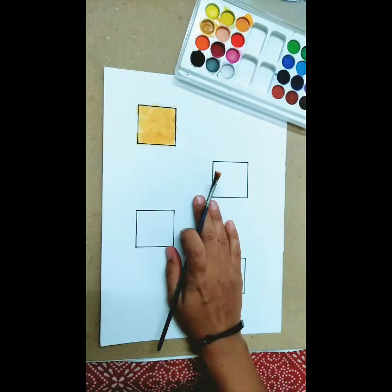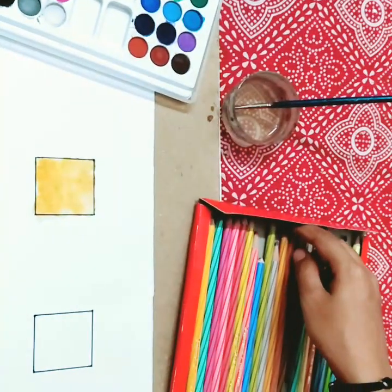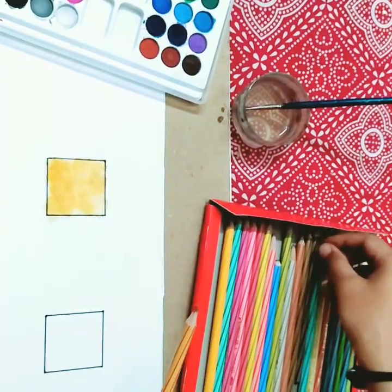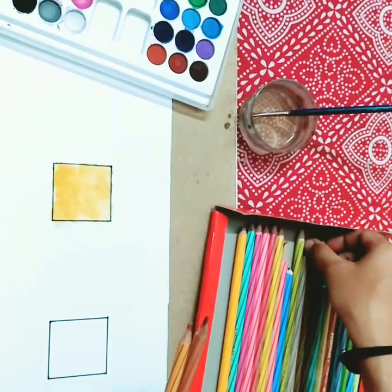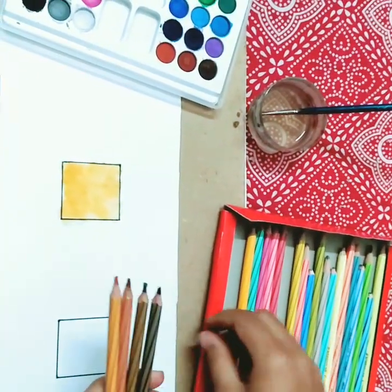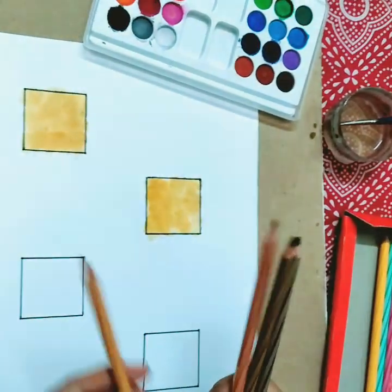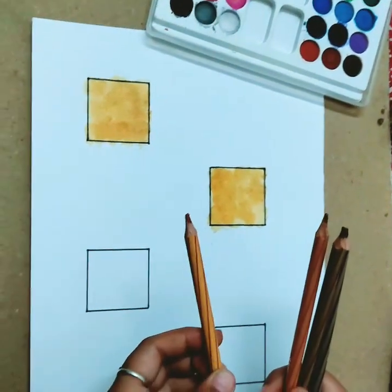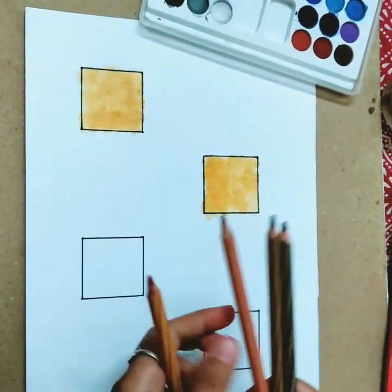Now let it dry. Now take out all the similar shades of the color pencils you want to give to the fur. We will start by applying the light color first, and then darker, and then the darkest.